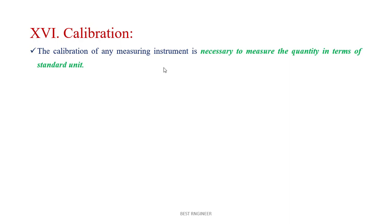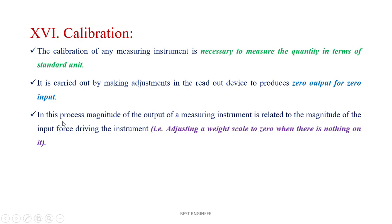Calibration: the calibration of any measuring instrument is necessary to measure quantities in terms of standard units. It is carried out by making adjustments in the readout device to produce zero output for zero input. In this process, the magnitude of output of a measuring instrument is related to the magnitude of the input force driving the instrument.